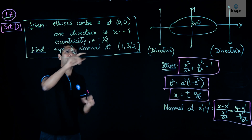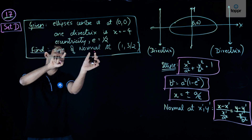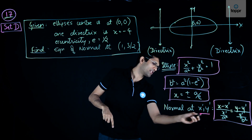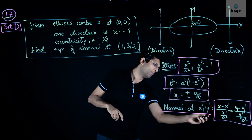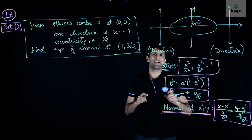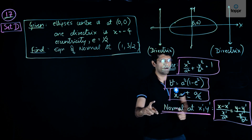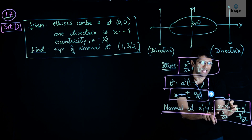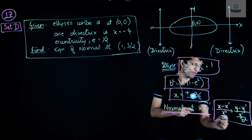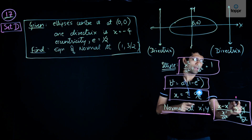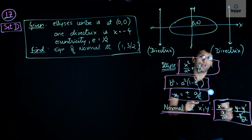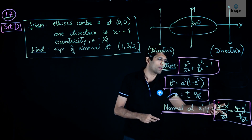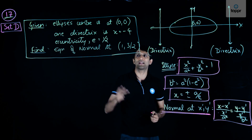We have to find the equation of the normal at a point. We will use the formula which gives us the equation of normal to an ellipse at a point. The equation of normal at (x', y') is given by: (x minus x') divided by (x'/a²) equals (y minus y') divided by (y'/b²). This is the equation we will be using to find the answer.